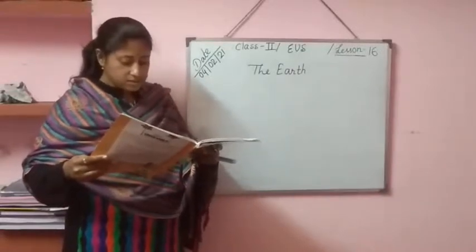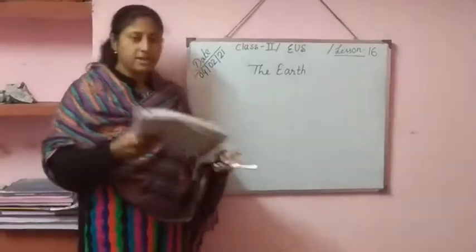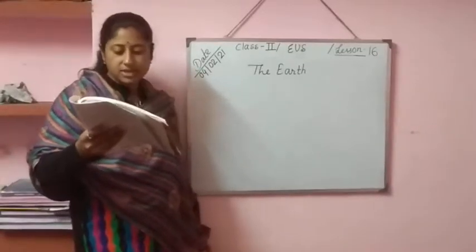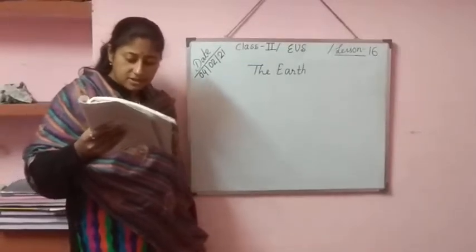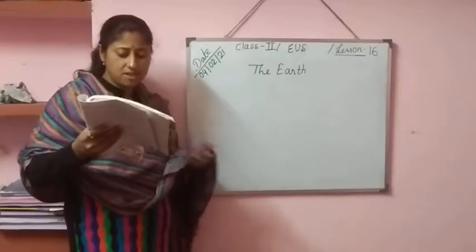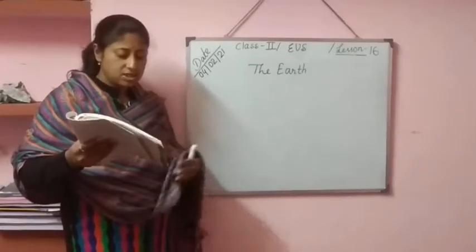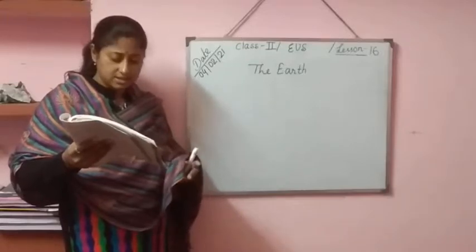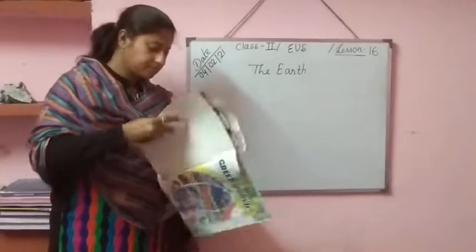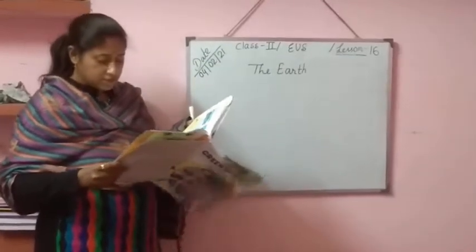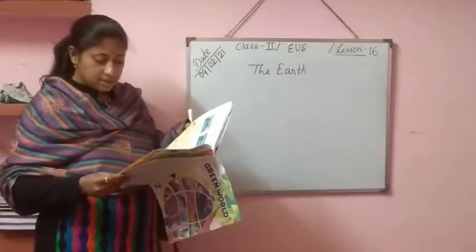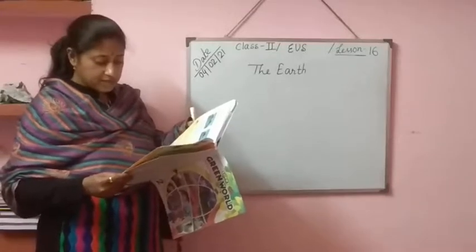The atmosphere or air that surrounds the earth is a mixture of various gases. The major gases are nitrogen, oxygen, and argon. Carbon dioxide and other gases are also present in trace amount only.